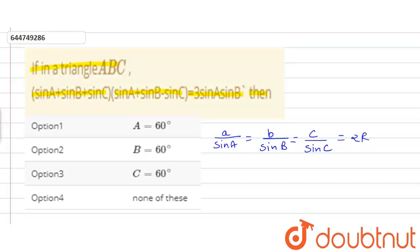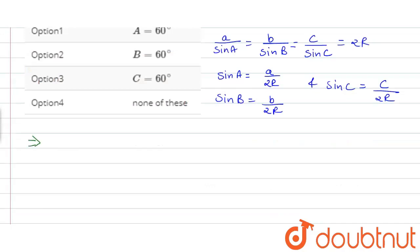From this we get sin A is equal to A upon 2R, sin B is equal to B upon 2R, and sin C is equal to C upon 2R. By putting these values in given equations we get A upon 2R plus B upon 2R plus C upon 2R into A upon 2R plus B upon 2R minus C upon 2R.